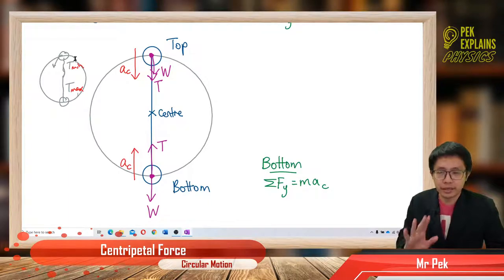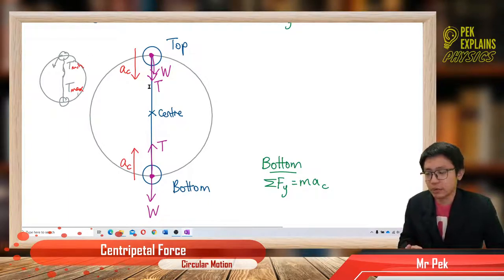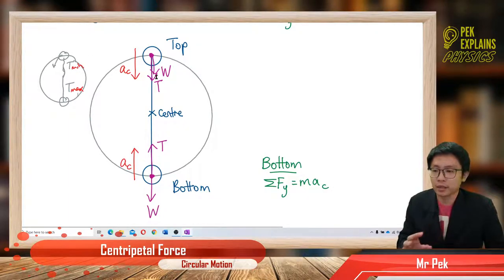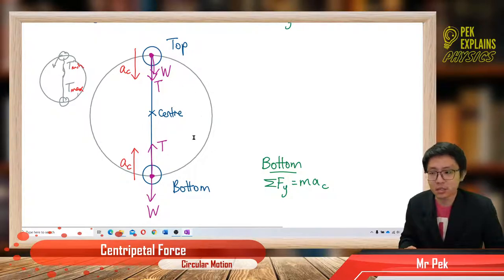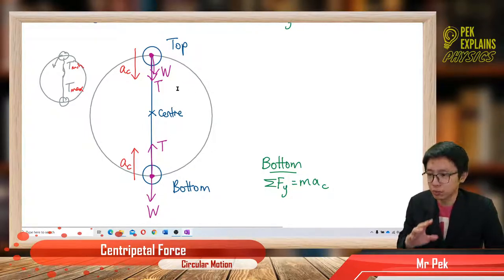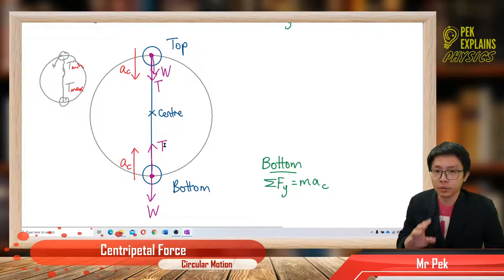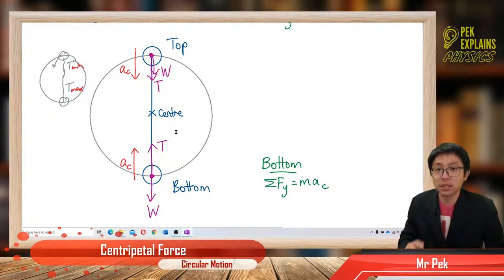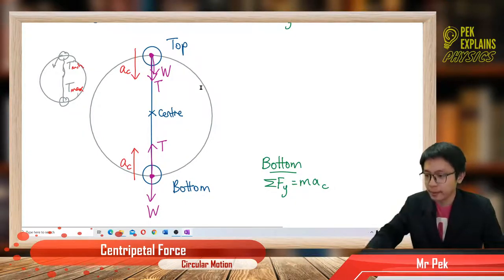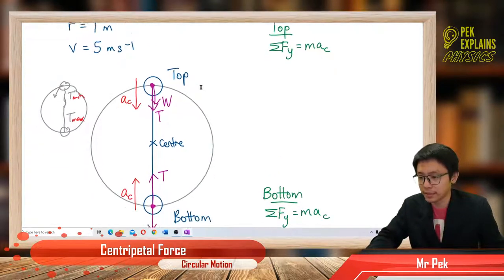That's how we imagine things. But technically, we need to show the calculation to prove that the top has minimum tension and the bottom has maximum tension. To prove that minimum and maximum, you need to make equations.